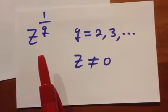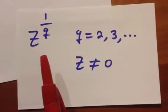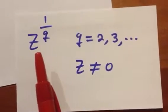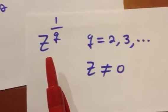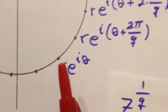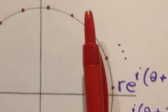It has exactly Q different values, and they all are equally spaced along a circle centered at the origin.